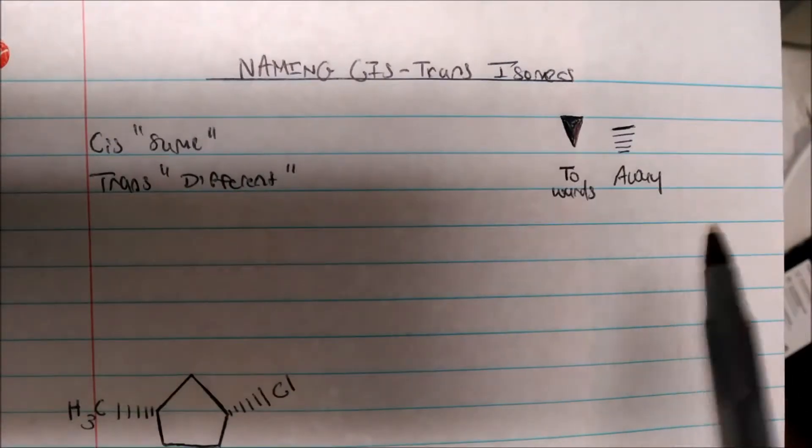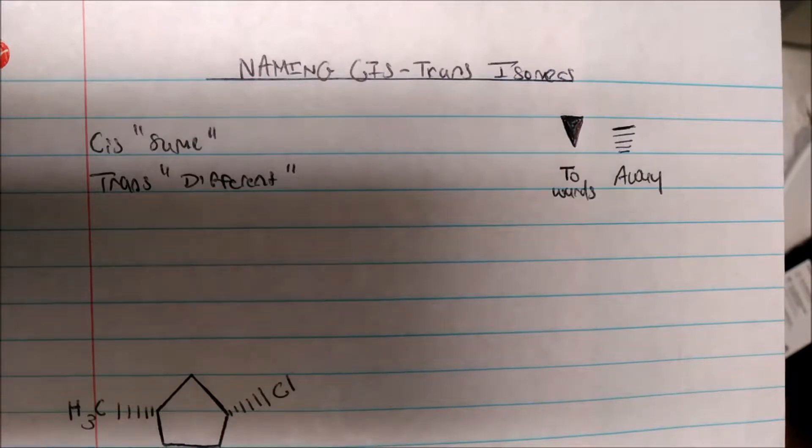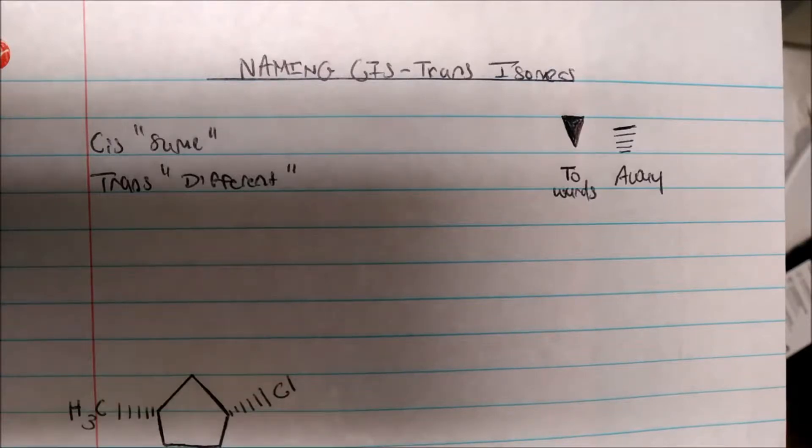These notations would be very helpful as knowing that a wedge will always come towards us or kind of coming up. And our dashes will be going away from us or kind of going down. So, again, helpful.